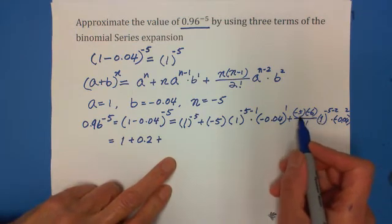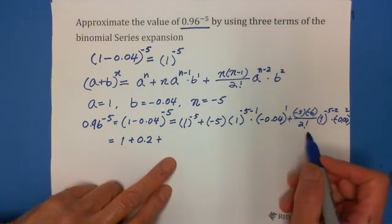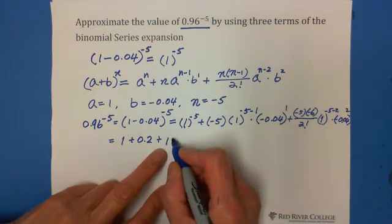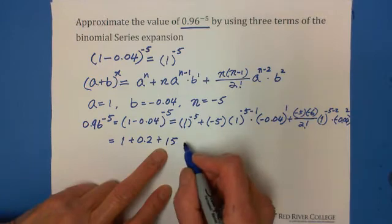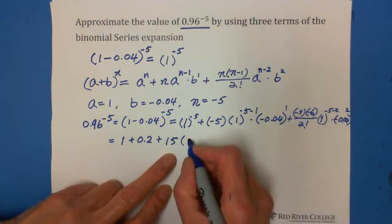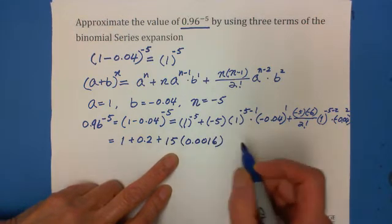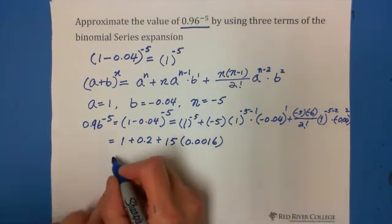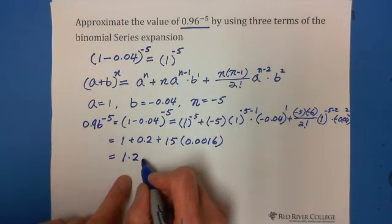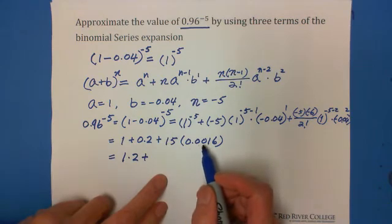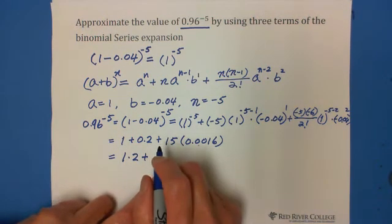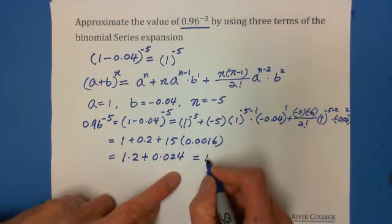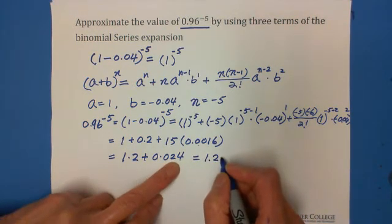And negative 5 times negative 6 is 30. 30 divided by 2 is 15. And this is still 1. And this is the negative square, positive is 0.0016, because 0.04 square equals 0.0016. That's why we add these three numbers together. This is 15 times 0.0016, we got 0.024. That's why the answer is 1.224.